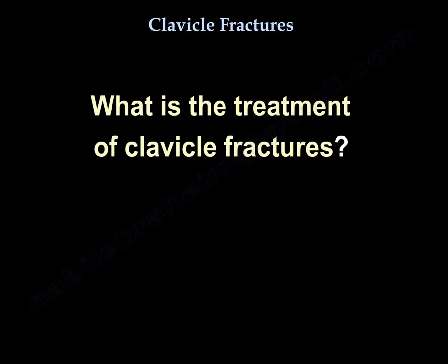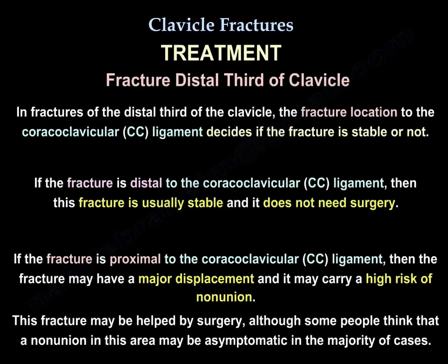For treatment of clavicle fractures: in fractures of the distal third, the fracture location relative to the coracoclavicular ligament determines if the fracture is stable or not. If the fracture is distal to the coracoclavicular ligament, it is usually stable and does not need surgery. If the fracture is proximal to the coracoclavicular ligament, it may have major displacement and a higher risk of nonunion, and surgery may be beneficial.